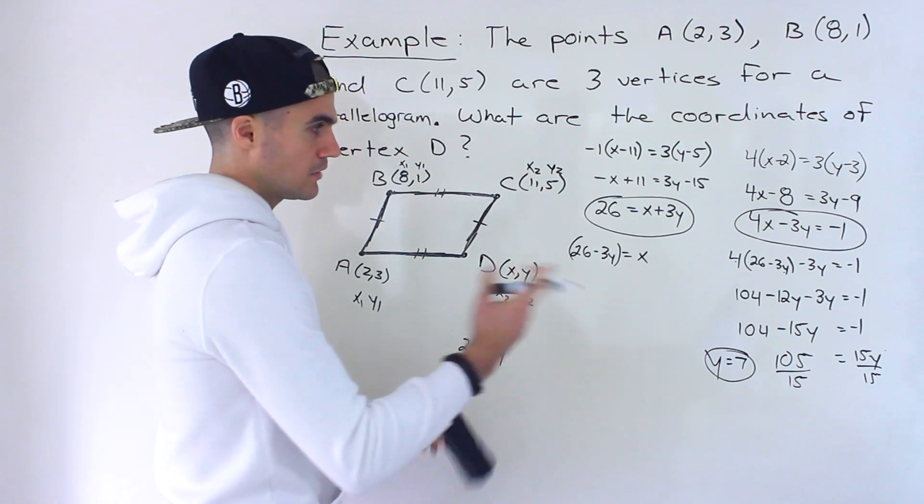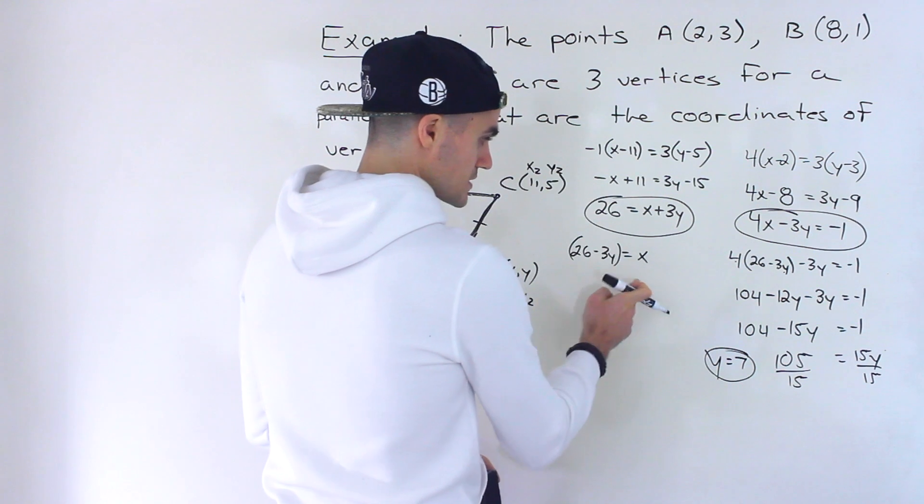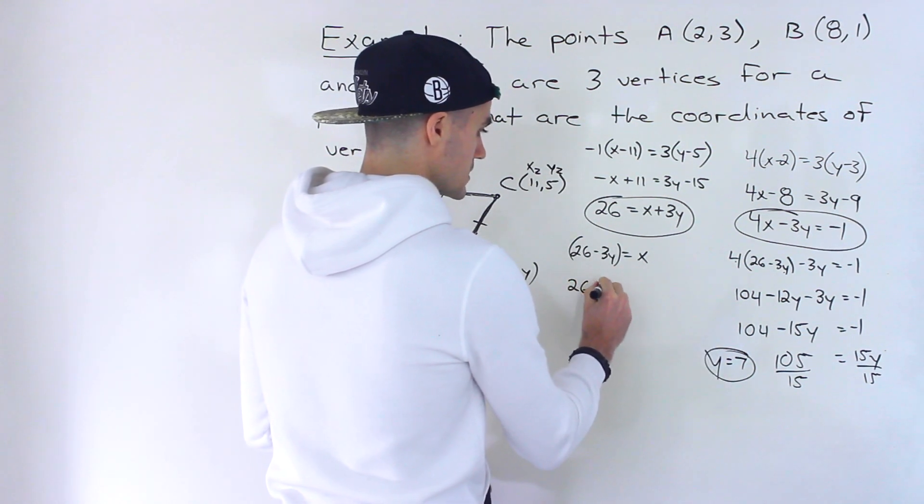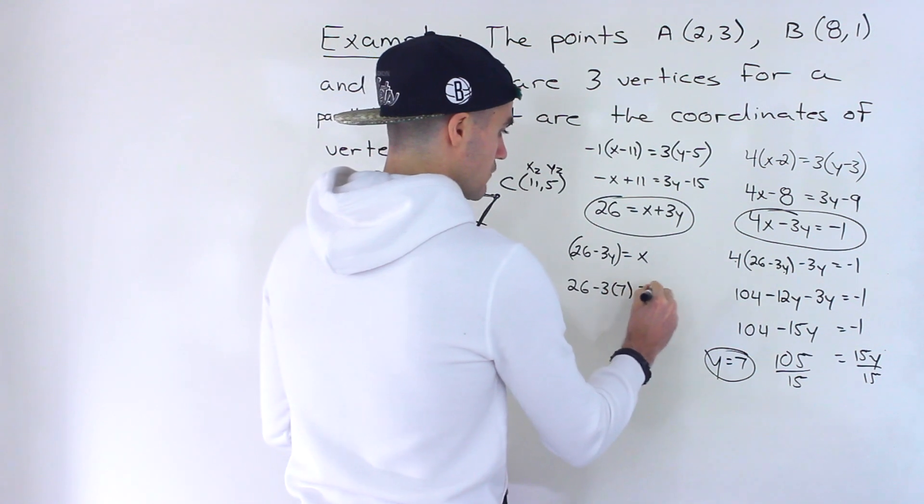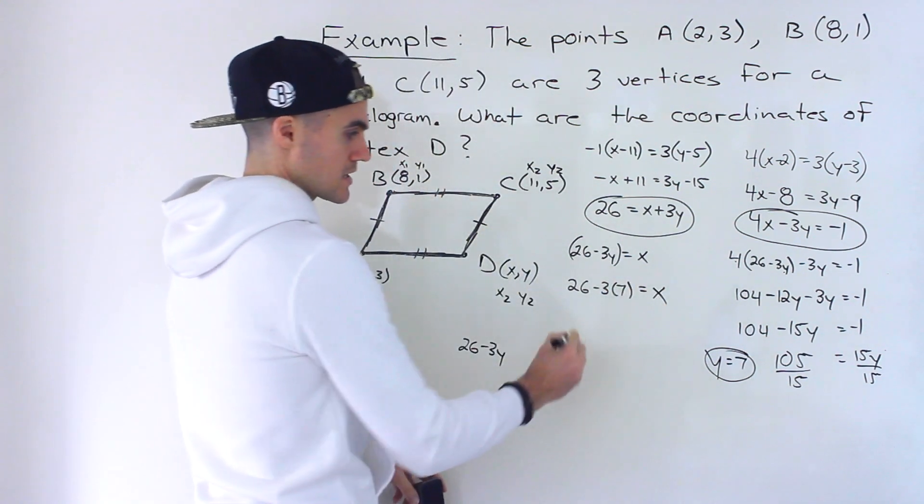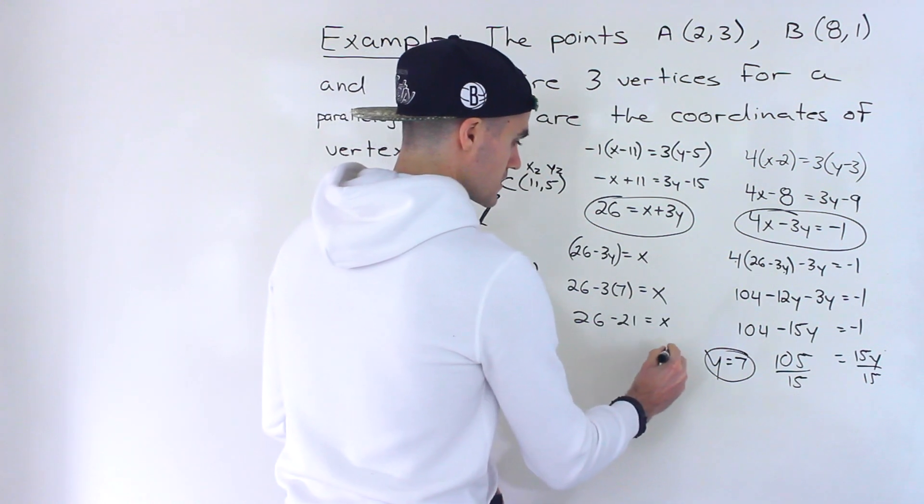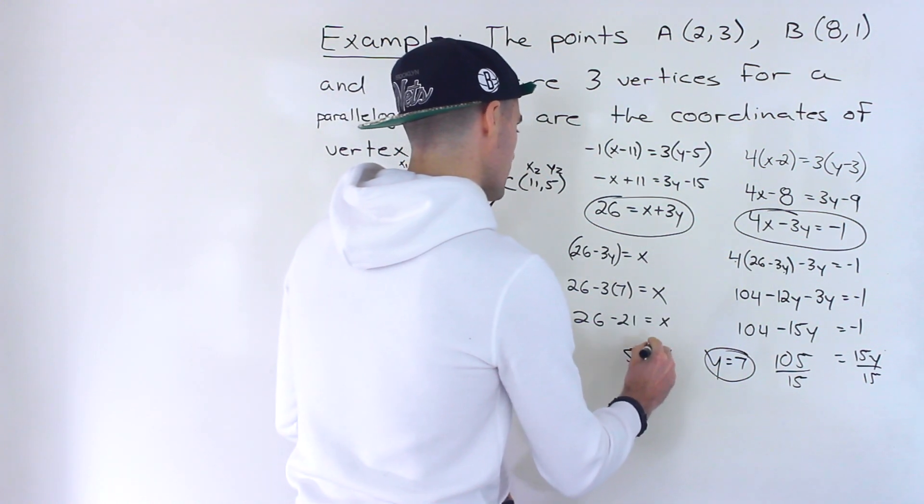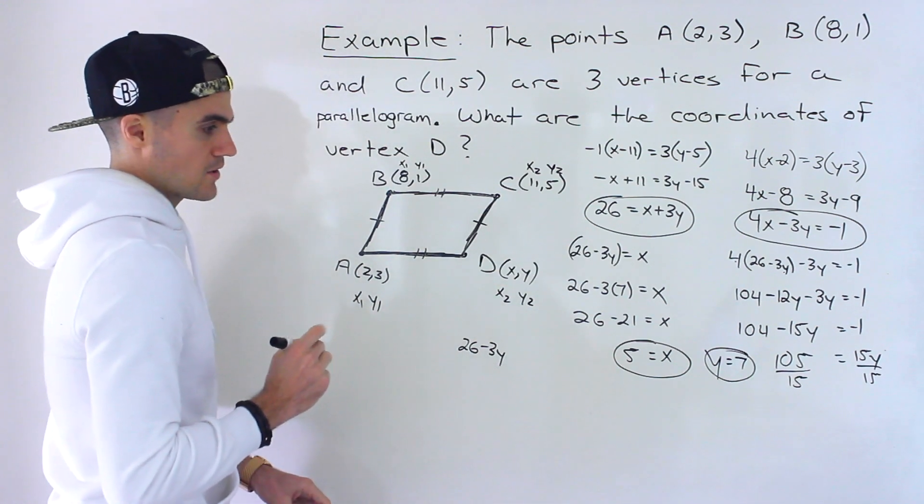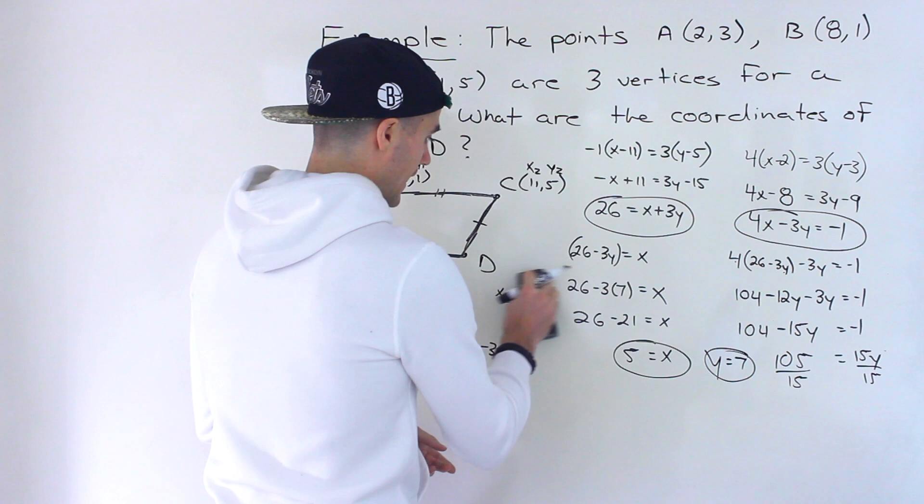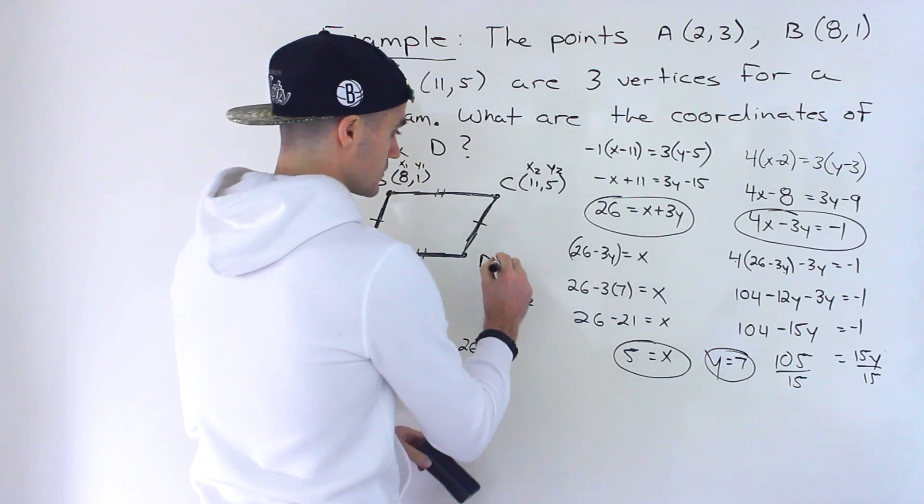And then to get the X value, you could plug it into either. We already isolated for the X here. So I'll just plug in this Y over here. So we'll have 26 minus 3 times 7 equals X, which is 26 minus 21, which gives us 5. Right? So X is 5, Y is 7. And then that ends up being the solution.